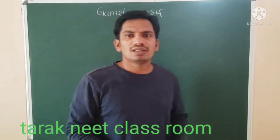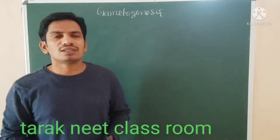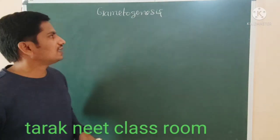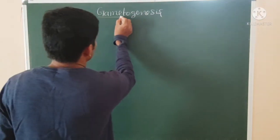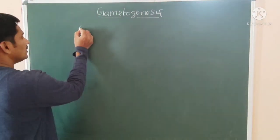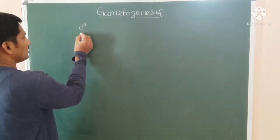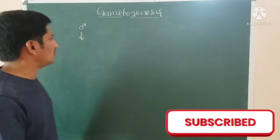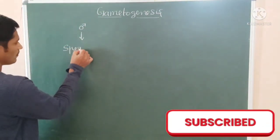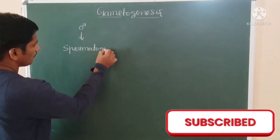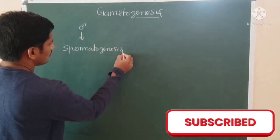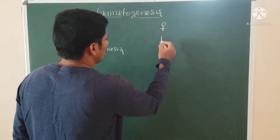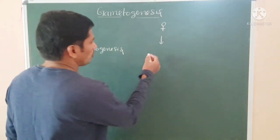Gametogenesis is a process which produces male and female gametes. Gametogenesis takes place in both male and female. In the male, the process of formation of sperm cells is known as spermatogenesis, whereas in female, the process of formation of the haploid ovum is known as oogenesis.